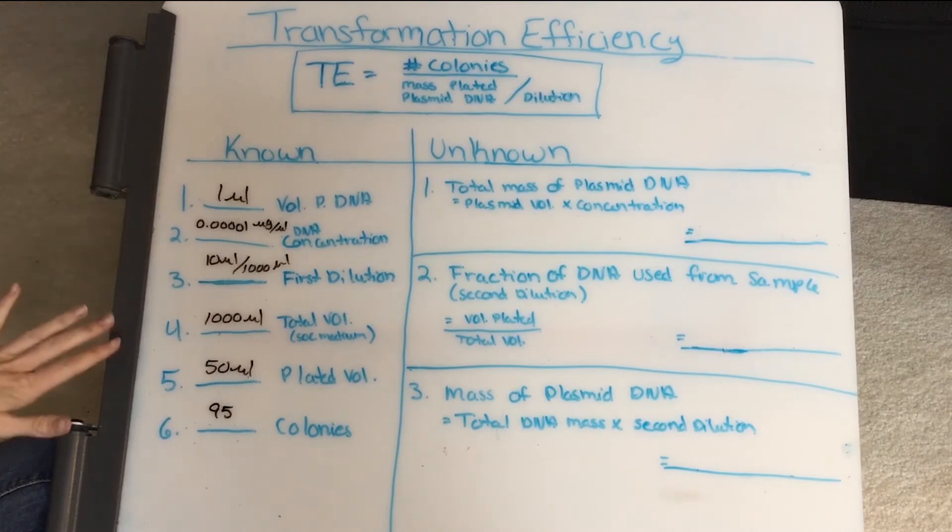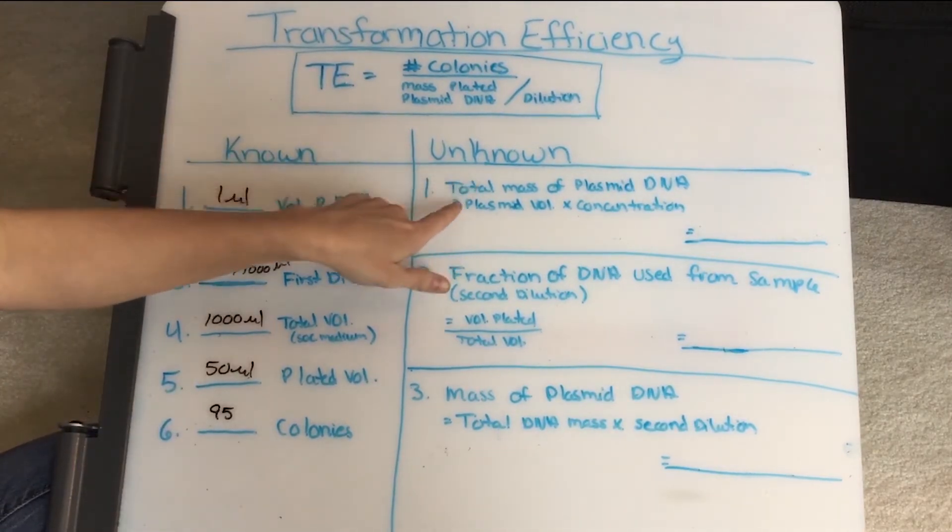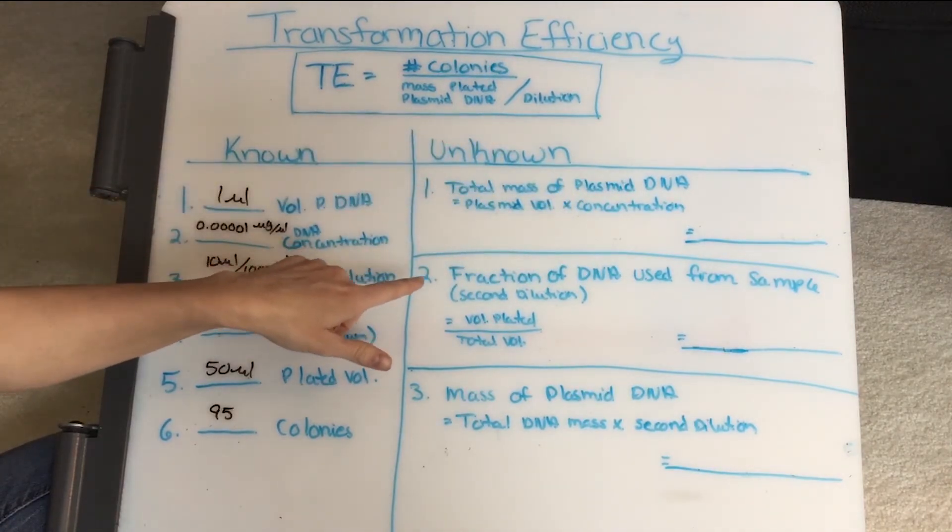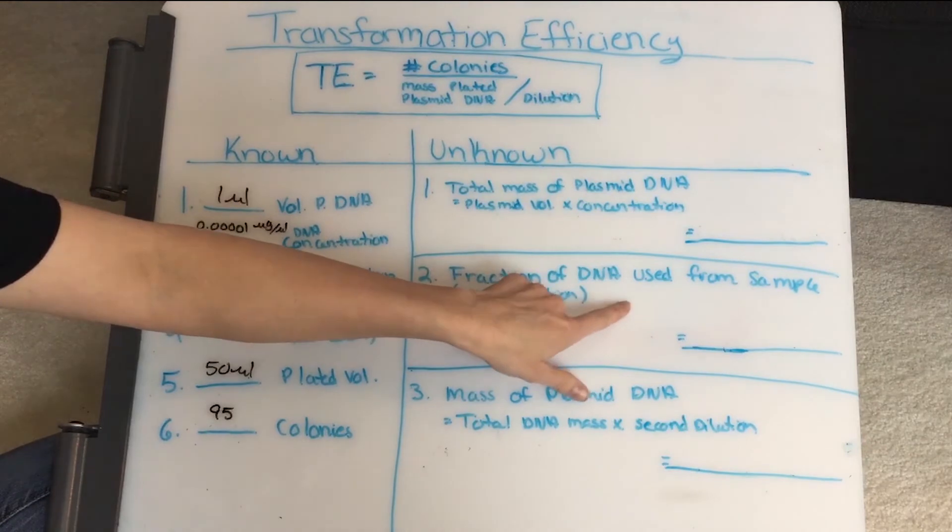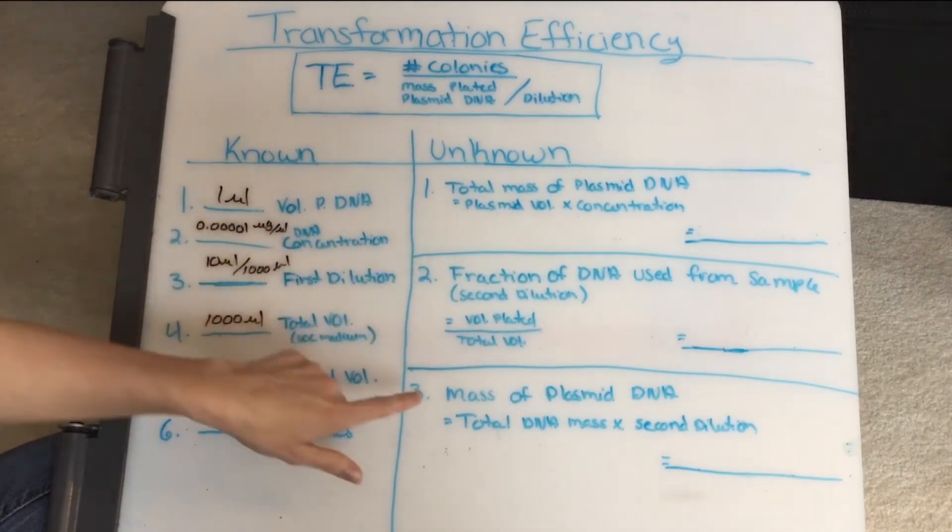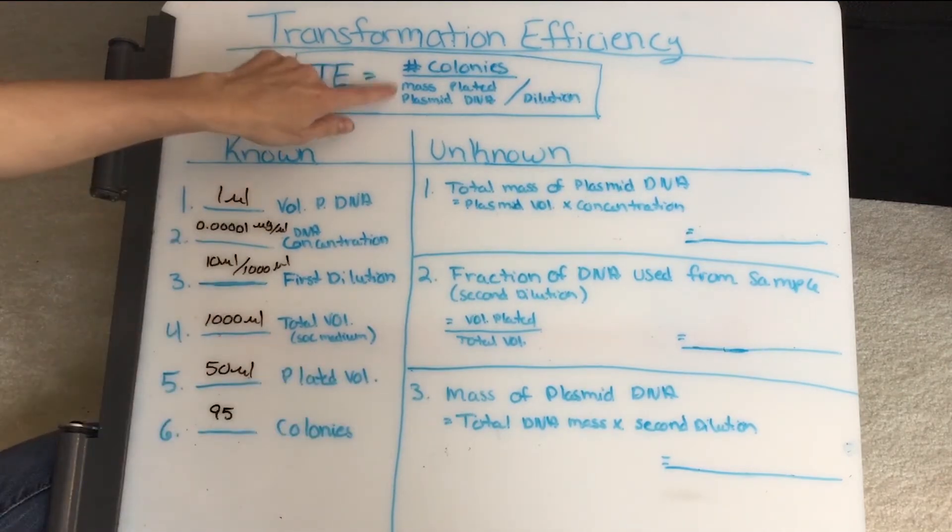Okay, so after solving my knowns, the next thing I want to look at are the things I need to solve for, or my unknowns. So the first thing I want to know is the total mass of plasmid DNA. Then I want to know the fraction of DNA that was used from sample, basically that's my second dilution. And then I'm going to look for the mass of plated plasmid DNA, which is this part right here.